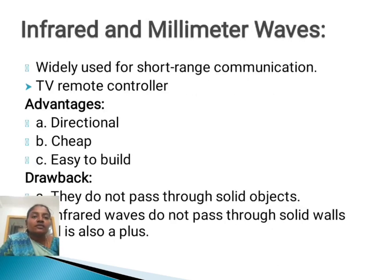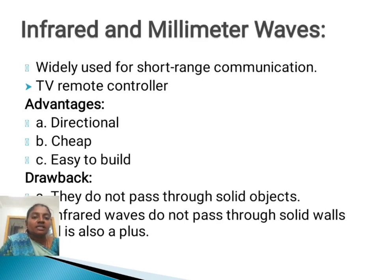The next one is infrared and millimeter waves. Widely used for short range communication, such as TV remote controllers. Advantages include being directional, cheap, and easy to build. They do not pass through solid objects — infrared waves do not pass through solid walls.